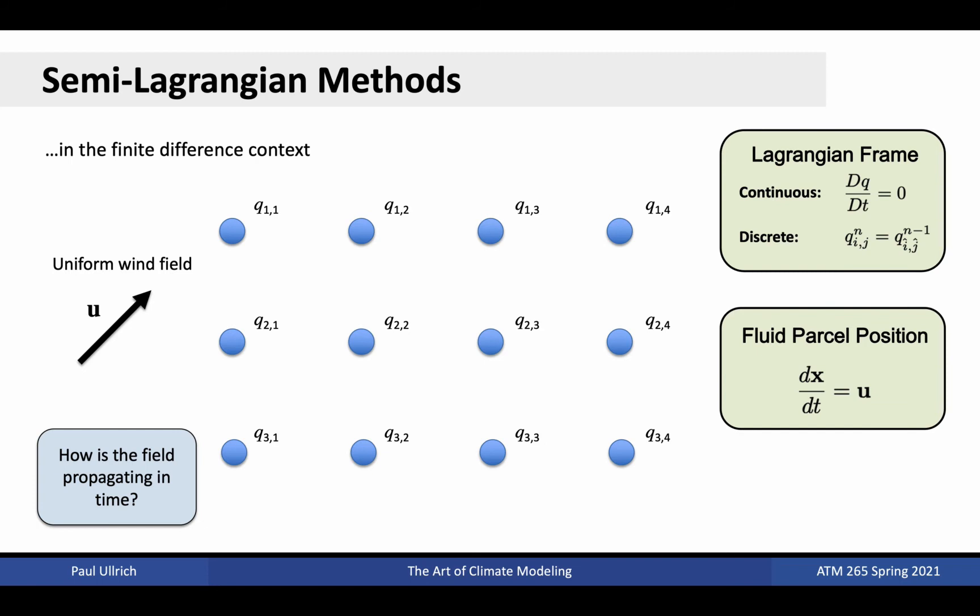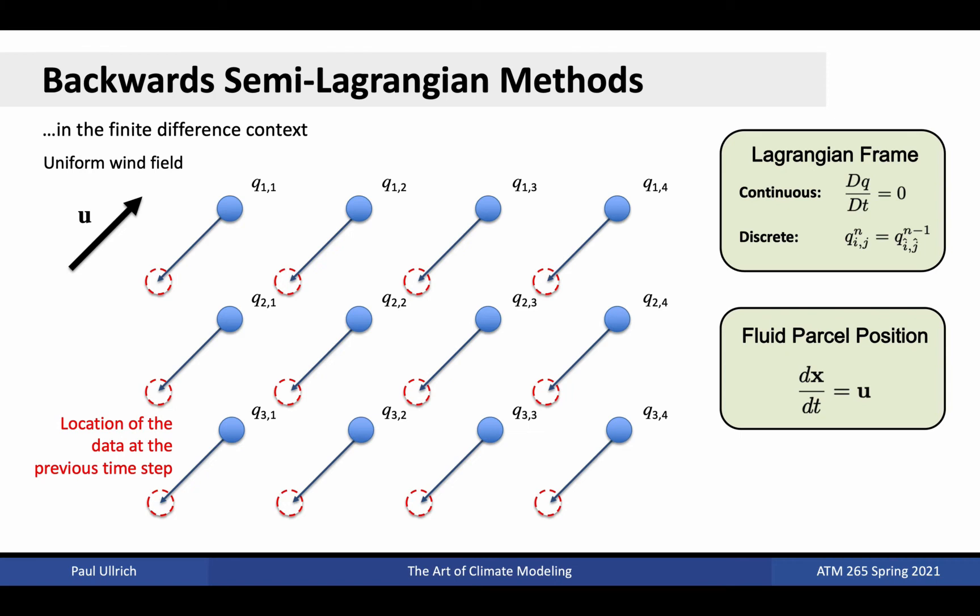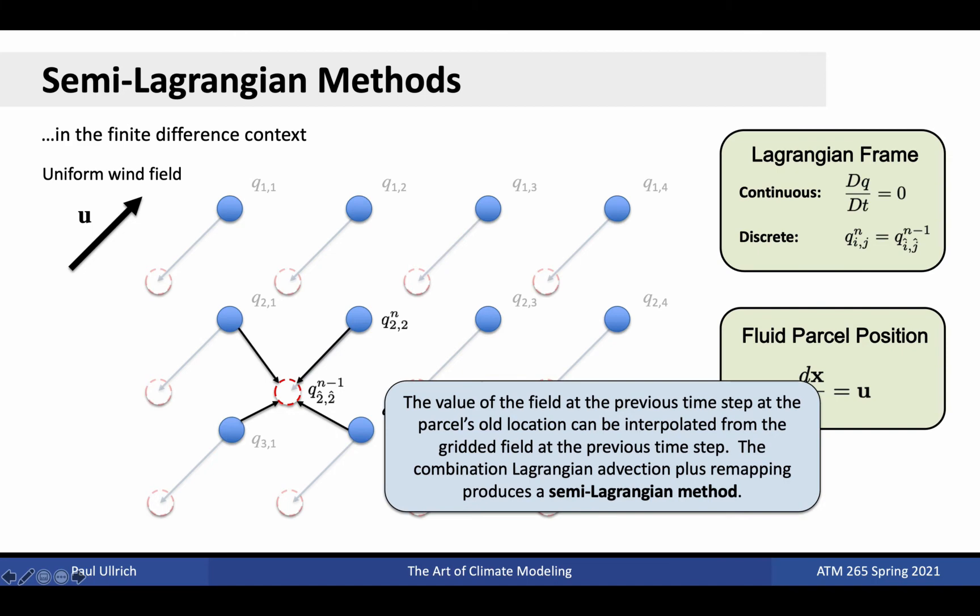If we integrate backward in time over a duration delta t, we obtain the position of the fluid parcel as it was at the previous time step. That is, under the uniform wind field depicted here, each of the red dashed circles indicate the position of the fluid parcel one time step earlier, while the blue circles represent the current positions of those fluid parcels. Over the course of the time step, the fluid parcels that are indicated by the red dashed lines will be advected or moved to match the positions of the blue fluid parcels. If we integrated backward in time all the way to the beginning of the simulation, then used the prescribed initial conditions to calculate the mixing ratio at each fluid parcel node, the result would be a fully Lagrangian method. However, this has numerous problems associated with it, including a tendency for fluid parcels to either bunch up or spread out over long time integrations. Instead, if we choose to interpolate to the red dashed position, we obtain a class of methods known as backward semi-Lagrangian methods.